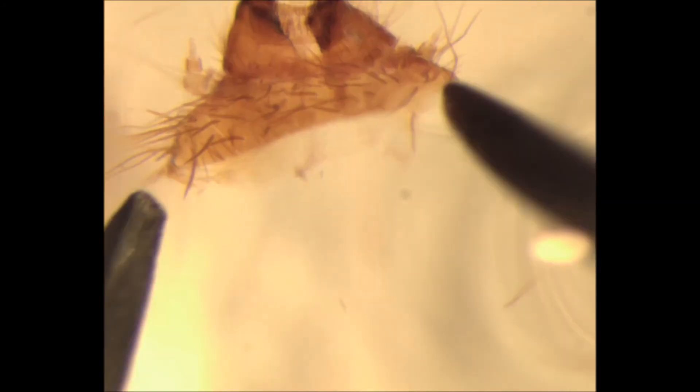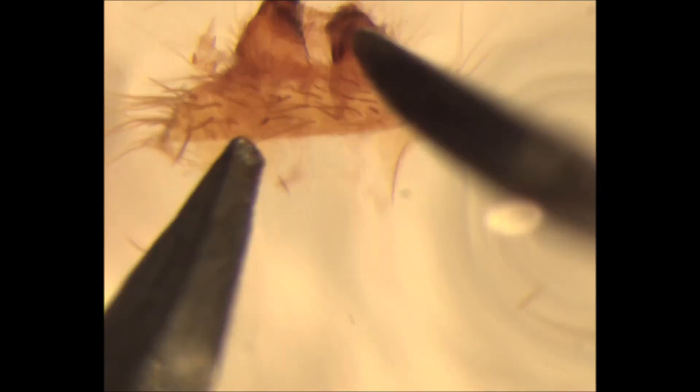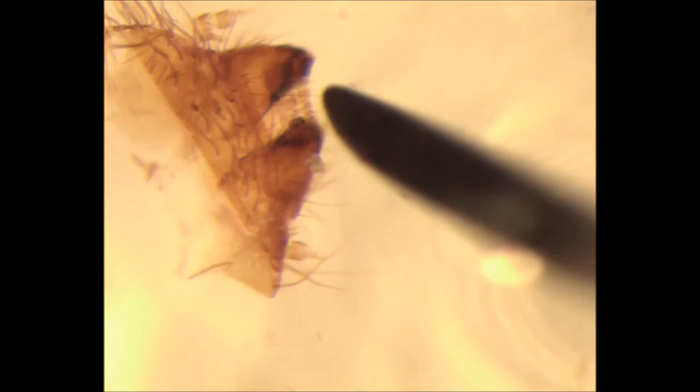The antennae on both sides, the labrum—the epipharynx is on the underside of the labrum here—and the two mandibles. So I'm going to hold it by one side with the forceps, push the mandibles through from the back. All the muscle tissue holding it in place is gone; it's very easy to remove. One mandible, two mandibles.